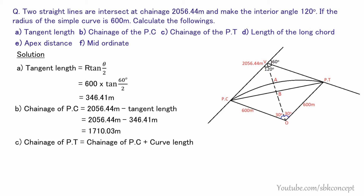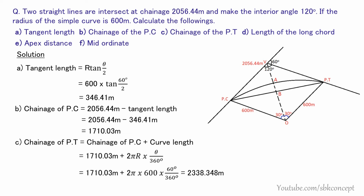Third, the chainage of the PT equals the chainage of the PC plus the curve length. Curve length = 2πR × (θ/360°) = 2π × 600 × (60/360). So chainage of PT = 1710.03 + curve length = 2338.348 meters.